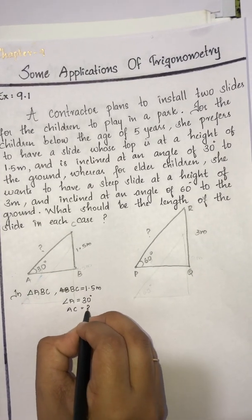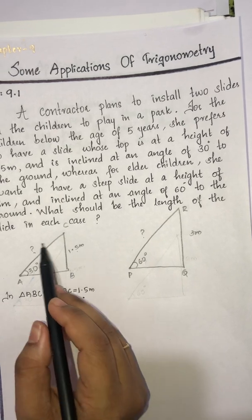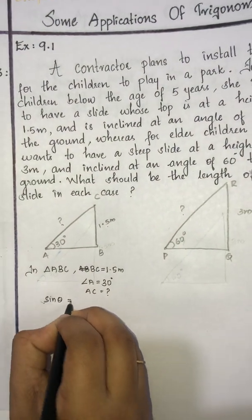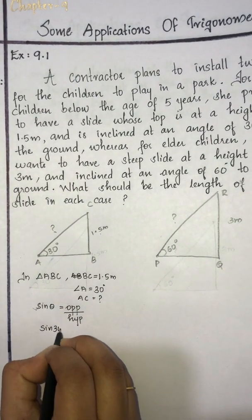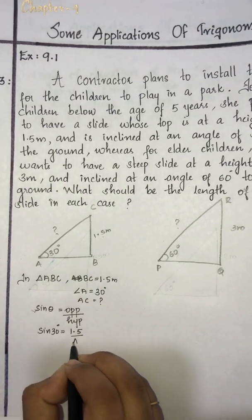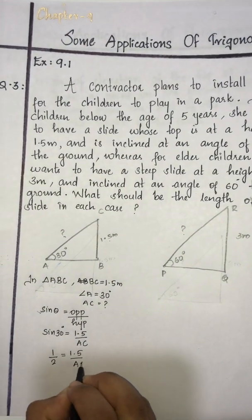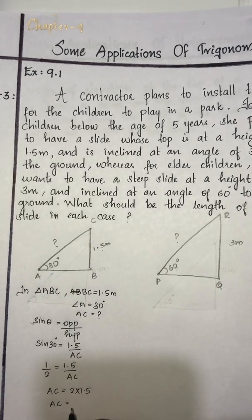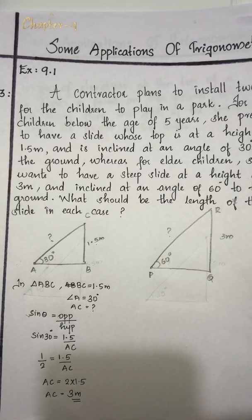We need to find AC. To find AC, we use opposite side divided by hypotenuse, which is sin theta. Sin theta equals opposite side by hypotenuse, that is sin 30 = 1.5 divided by AC. Sin 30 is 1 by 2, so 1 by 2 equals 1.5 divided by AC. Therefore AC equals 2 times 1.5, which gives AC equal to 3 meter. So in the first case, for children below the age of 5 years, the length of the slide is 3 meter.